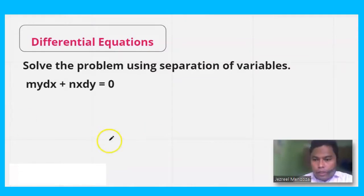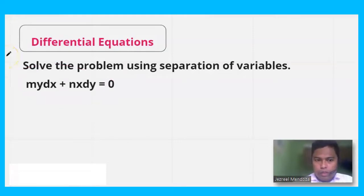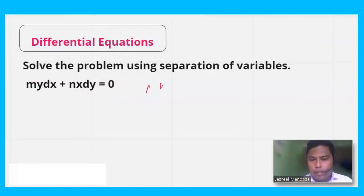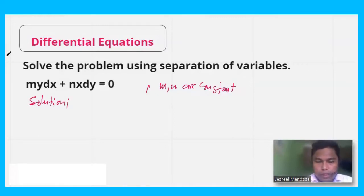Let's solve the second problem: my·dx + nx·dy = 0, where m and n are constants. We are looking for a general solution using separation of variables.